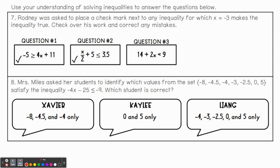Let's look at number 7. Rodney was asked to place a checkmark next to any inequality for which X equals negative 3 makes the inequality true. So we're going to make this really simple. If I plug in negative 3 here, let's see, 4 times negative 3 would give me negative 12. Let's see, if I added 11 to that, that would give me negative 1. So if we rewrote this, negative 5 is greater than or equal to negative 1. Is that true? No, it's not. So Rodney was actually wrong on this one. Negative 5 is not greater than negative 1, although I can understand why he put that. But when we're working with negatives, the bigger the negative number, the value is going to be smaller, right? So this one is not correct. He did not get that right.